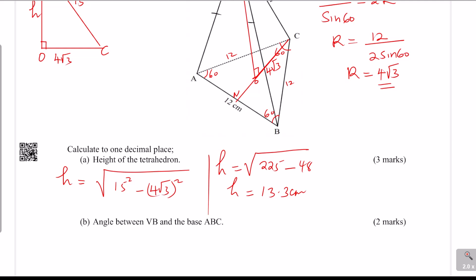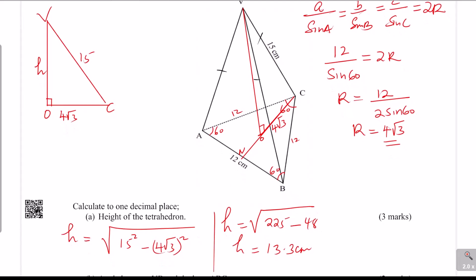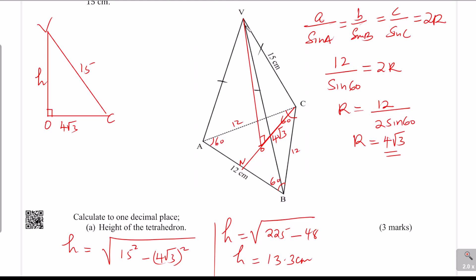Part 2: the angle between VB and the base ABC. VB is a slant edge. The projection of VB onto the base is BO — we connect B to O. The angle between a line and a plane is the angle between that line and its projection on the plane. So the required angle is between VB and BO.